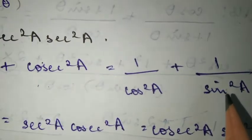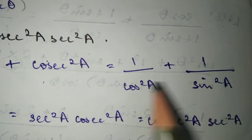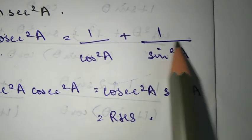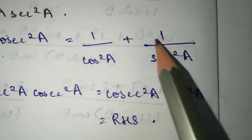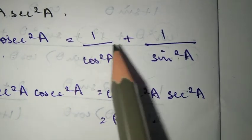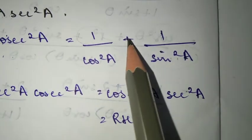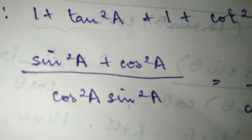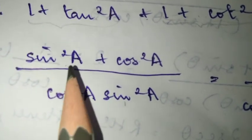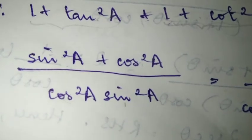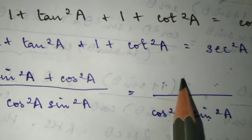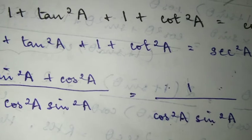Now we will take the LCM. The LCM is cos²A times sin²A. So in the numerator: 1 into the opposite denominator sin²A, plus 1 into the opposite denominator cos²A. So you have 1 into sin²A will be sin²A, plus cos²A. So we have sin²A plus cos²A. Now, the formula: sin²A plus cos²A equals 1. So we have 1 in the numerator, and cos²A times sin²A in the denominator.